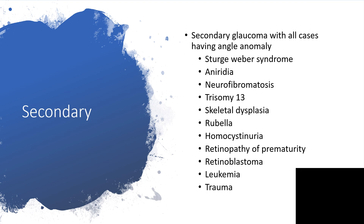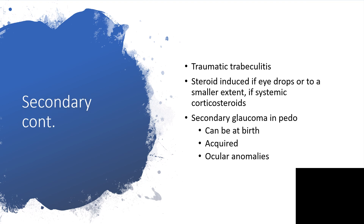Retinoblastoma — any child diagnosed with retinoblastoma is at risk of secondary glaucoma because of possible angle anomaly. Leukemia and of course trauma also pose risks. Secondary glaucoma can also result from traumatic trabeculitis, steroid-induced causes — if the child has been on eye drops or, to a lesser extent, on systemic corticosteroids — or from acquired ocular anomalies.